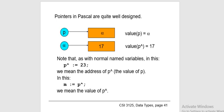A structure pointer points to a structure type and can be declared the same way as other primitive type pointers. A function pointer points to a function — it is different from other pointers in that instead of pointing to data, it points to code. In C we can define a pointer that stores the memory address of another pointer — such pointers are called double pointers or pointer-to-pointer. Instead of pointing to a data value, they point to another pointer. Dereferencing a double pointer once gets the stored pointer; dereferencing again gets the value.